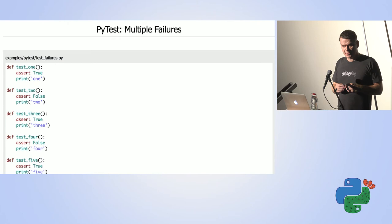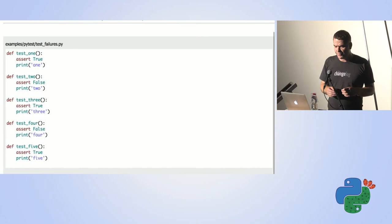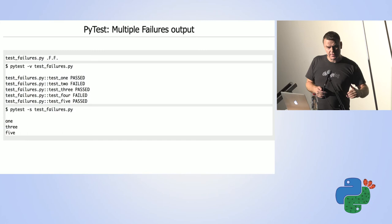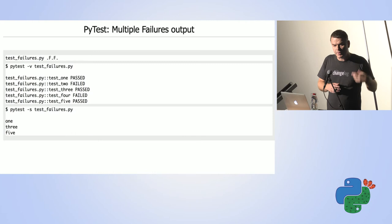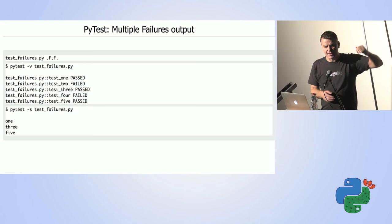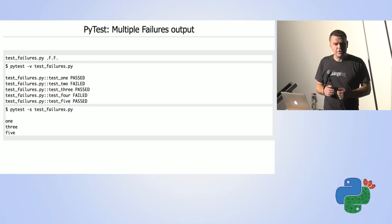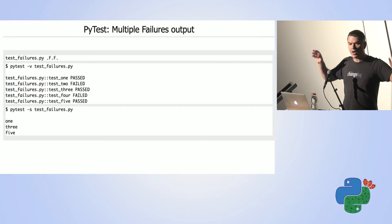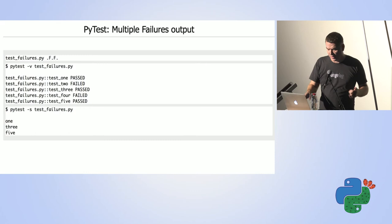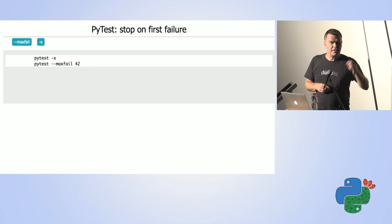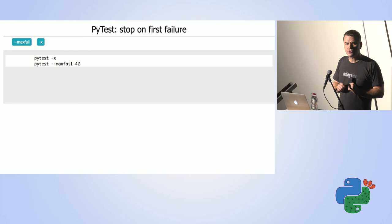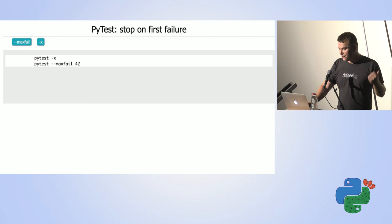If you have multiple test functions and some fail while others succeed, PyTest doesn't stop at the first failure — it runs all tests and prints all failures. Sometimes you'd prefer to stop after the first test failure, because maybe a syntax error is causing all tests to fail. For that you can use the '-x' flag, and it will stop after the first test failure. If you want to stop after, say, 42 failures, you can use the '--maxfail' flag.